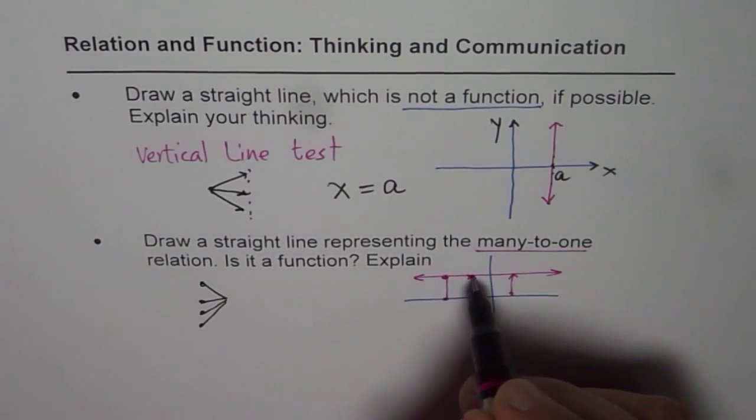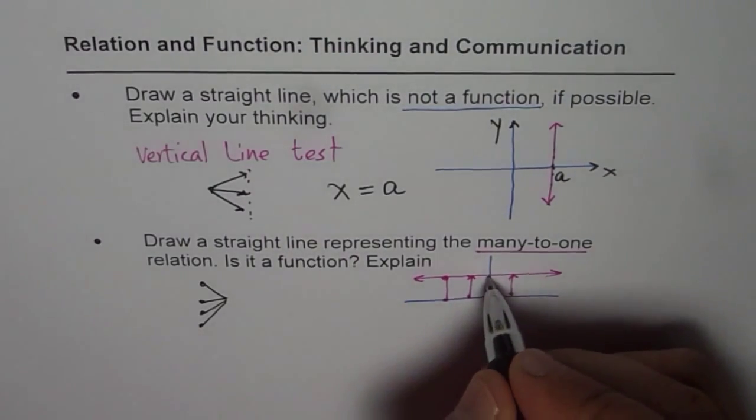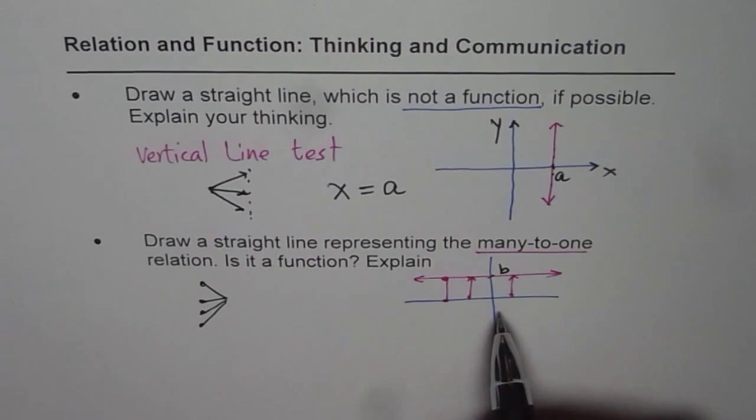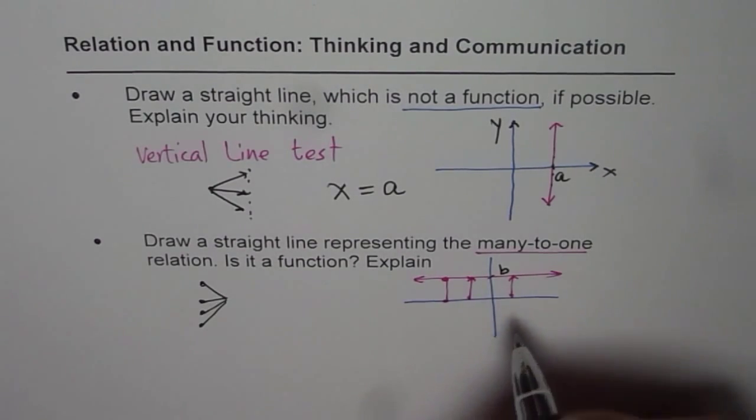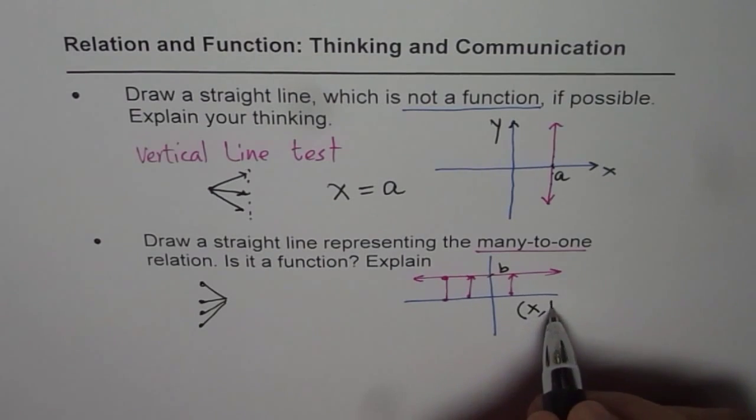Do you see that? These are the points, and these are all exactly the same points. Let's call this as b. So in general, a point on this line will be any value of x, and the y value will be b.